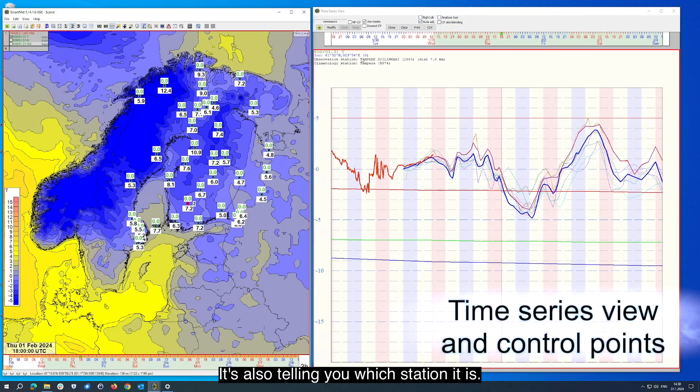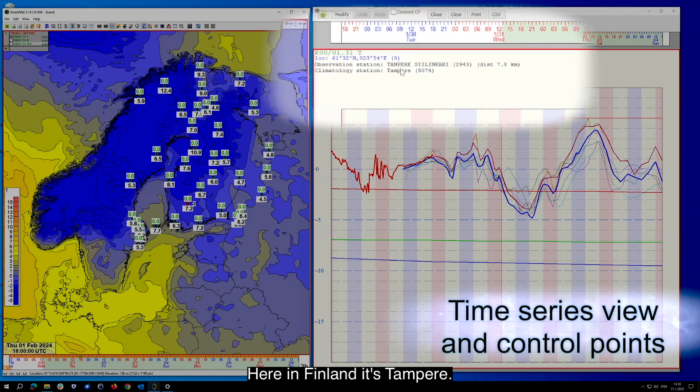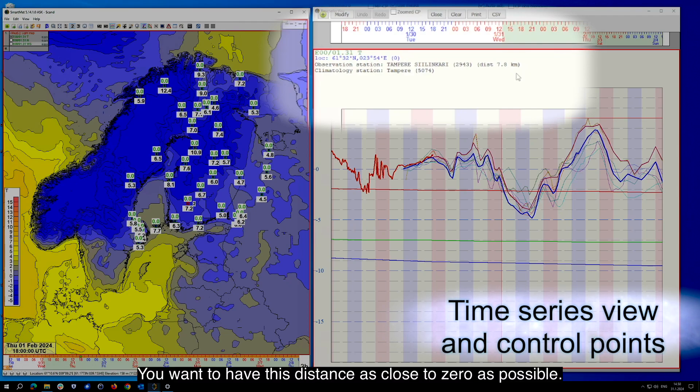It's also telling you which station it is. Here in Finland it's Tampere, and you can also see how far away from that point your control point actually is. You want to have this distance as close to zero as possible.